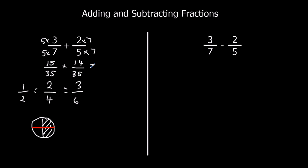And now we've got fractions with a common denominator, so I've got 15 thirty-fifths plus 14 thirty-fifths. 15 plus 14 is 29, and they are still thirty-fifths. 15 of them plus 14 of them is 29 of them, and that is the final answer.